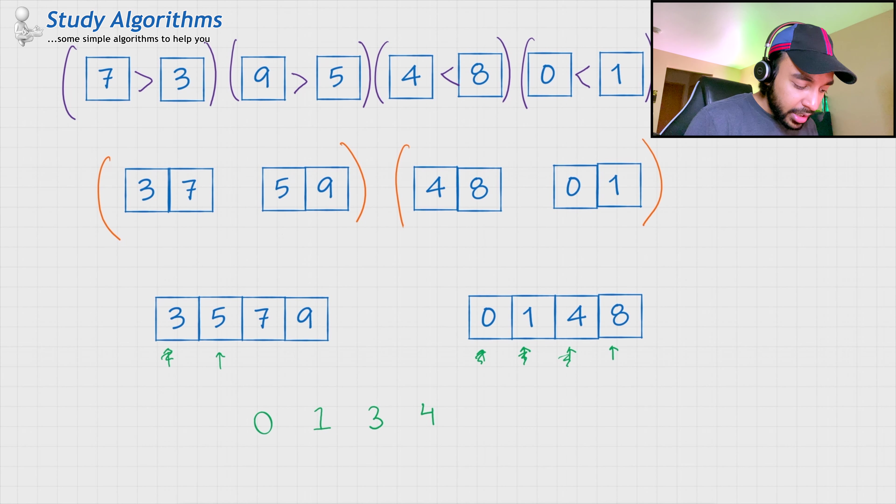I see 5 and 8. Since, 5 is smaller, I copy 5. Now, I compare 7 and 8. Since, 7 is smaller, I copy 7. Then, I compare 8 and 9. Since, 8 is smaller, I copy 8. And, ultimately, I copy 9.